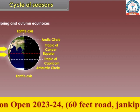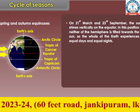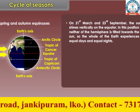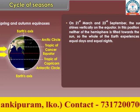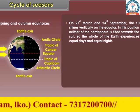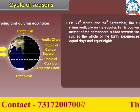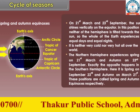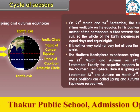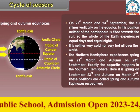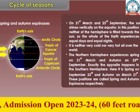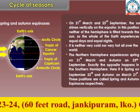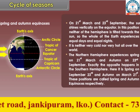Spring and Autumn Equinoxes: on 21st March and 23rd September, the sun shines vertically on the equator. In this position, neither of the hemispheres is tilted towards the sun, so the whole of the earth experiences equal days and equal nights. It is neither very cold nor very hot all over the world. The Northern Hemisphere experiences spring on 21st March and autumn on 23rd September. Exactly the opposite happens in the Southern Hemisphere — it is spring on September 23rd and autumn on March 21st. These positions are called spring and autumn equinoxes respectively.